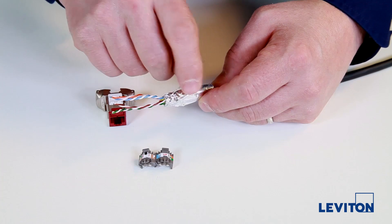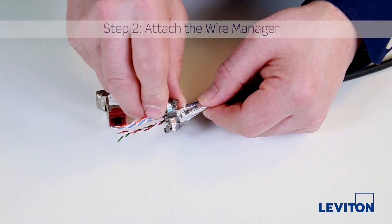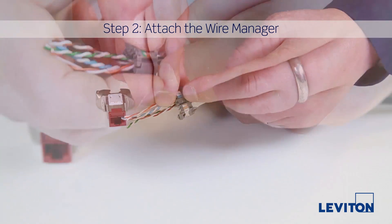Pull the drain wire close to either blue or green twisted pair, whichever is closest. Then line the wire manager up with the corresponding colored pair and snap it shut.